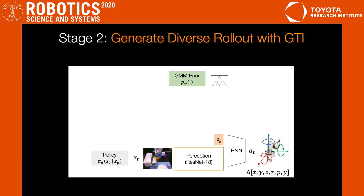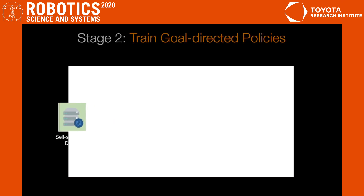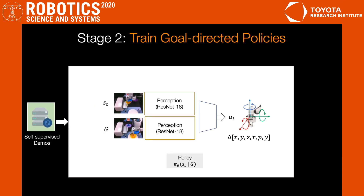In Stage 2, we use the Stage 1 policy to collect a handful of self-generated diverse rollouts by using the GMM prior to generate latent sub-goals for the low-level controller. The diversity captured in the GMM prior ensures that the Stage 1 policy will exhibit different behaviors at trajectory intersections, resulting in novel trajectories with unseen start and goal pairs. We then train a new goal-directed policy that can perform intentional behaviors from these undirected rollouts.